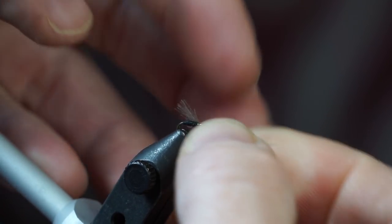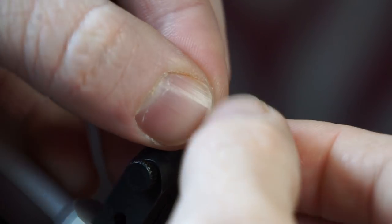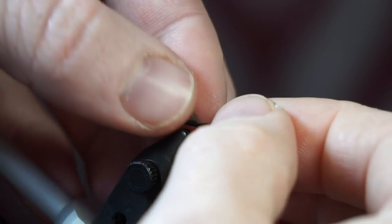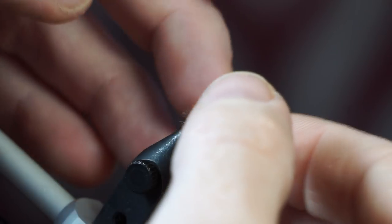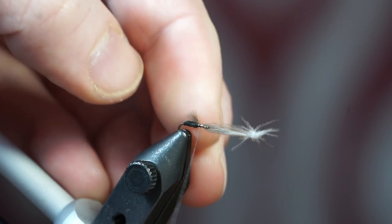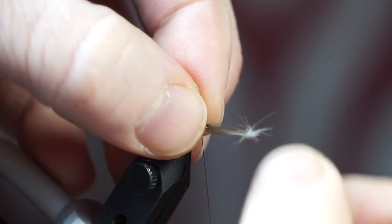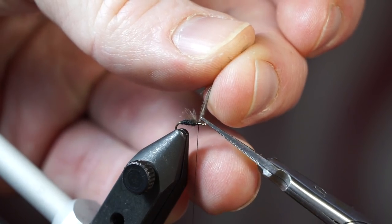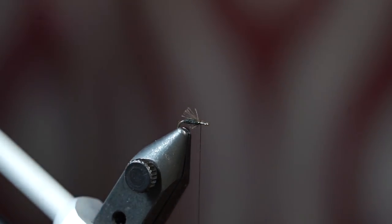Now pull the feather down to ensure the tips extend out at the correct length. I like them to be about halfway to the bend of the hook. Then clip off the waste and make a few tight wraps to lock into place.